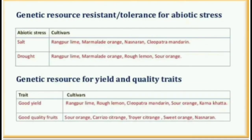Genetic resource for resistance or tolerance to abiotic stress: For salt stress, tolerant cultivars include Rangpur lime, marmalade orange, Nasa naran, and Cleopatra mandarin. For drought stress, tolerant cultivars include Rangpur lime, marmalade orange, rough lemon, and sour orange.